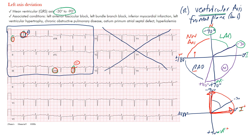We now need to determine whether the axis is in the normal region or in the left axis deviation region. We use lead II for this. The positive end of lead II is at positive 60 degrees. Ninety degrees perpendicular to lead II falls right on negative 30 degrees. If it is positive in lead II, the axis goes toward lead II — normal range. If negative, it goes away — left axis deviation.